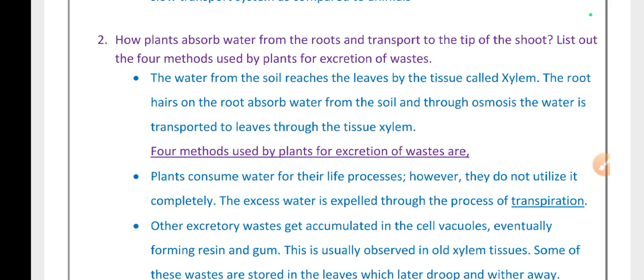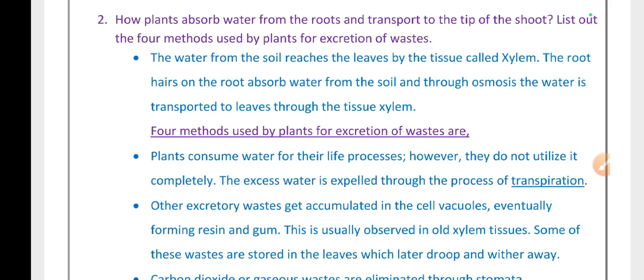The water from the soil reaches the leaves by the tissue called xylem. The root hairs on the root absorb water from the soil, and through osmosis the water is transported to leaves through the tissue xylem.